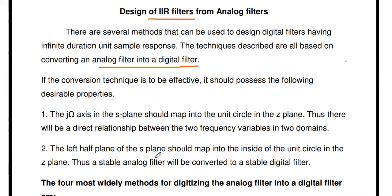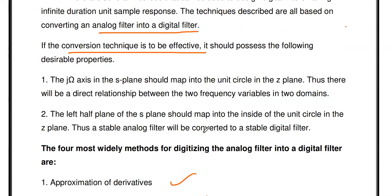For a conversion technique to be effective, it must possess two properties. All four methods possess these two properties. The first property is that the J-omega axis in the S-plane should be mapped into the unit circle in the Z-plane.